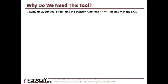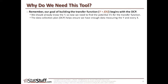Remember, what we're trying to do here is to build the transfer function — that's the Y equals F of X. In order to do that, we have to begin with trying to build the data collection plan, or the DCP. So we should already know what the project Y is, and now we need to find out what are those potential Xs for that transfer function. The data collection plan is going to help us ensure that we have enough data for measuring that Y and every one of those Xs within the transfer function.